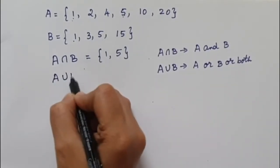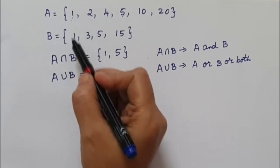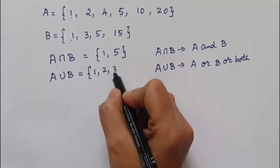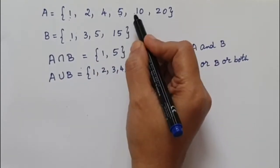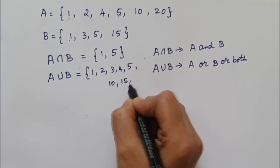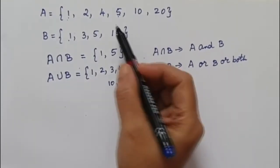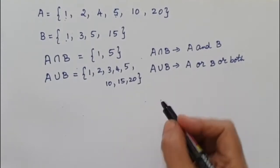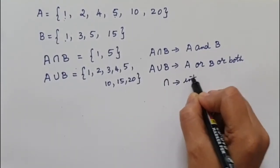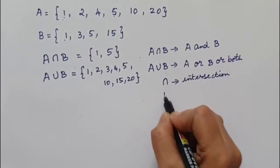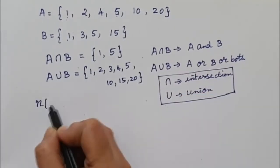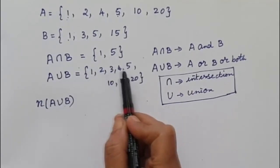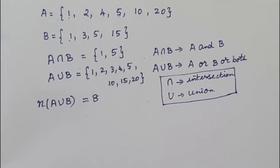The next thing is A union B. A union B means it has to be present in set A or in B or in both. A union B equals — we take all the elements: 1, 2, 3, 4, 5, 10, 15, and 20. We combine all the elements, writing each only once. This is A union B — we write all elements whether in A, in B, or in both. The symbol for intersection is ∩ and the symbol for union is ∪. The number of elements in A union B is 8.